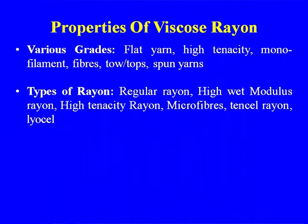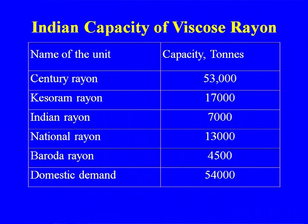The various grades and types of viscose rayon include regular, high wet modulus, high tenacity, microfibers, and tensile rayon as some trade names. Major producers in India include Century Rayon — with a unit at Kalyan and pulp production at Century Pulp and Paper at Kashipur — Grasim Industries, Harrier Polyfibres, Keshuram Rayon, Indian Rayon, National Rayon, and Baroda Rayon. These companies meet the domestic demand for viscose.